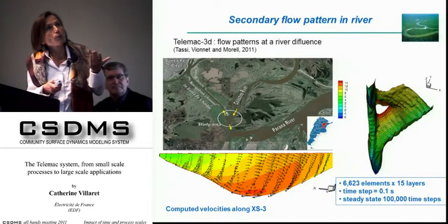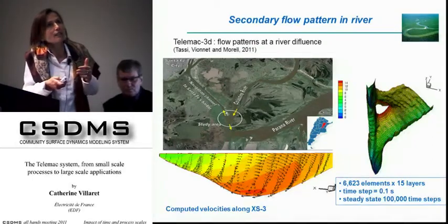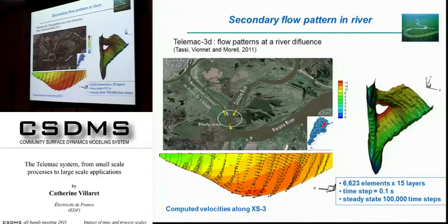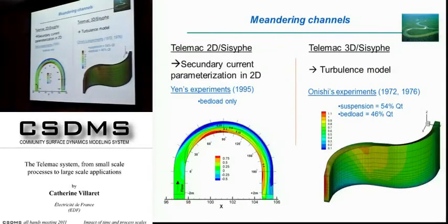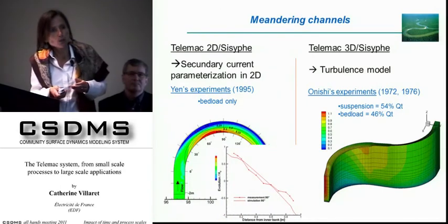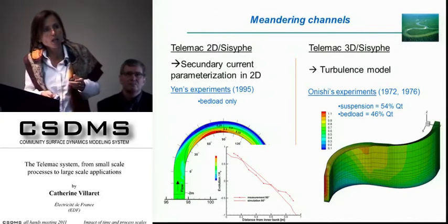Another example: you can use a 3D model to represent the flow pattern in a meandering river. Related to what Jorge told us, you have a secondary recirculation captured by the 3D model. They are validating against ADCP measurements on the Parana River in collaboration with Carlos Yune. For a meandering channel test case with deposit on the inner bank and erosion on the outer edge, in 2D you need to parameterize secondary currents, but in 3D you just need a good turbulence model. Using the parameterization gives fairly good agreement with measurements.